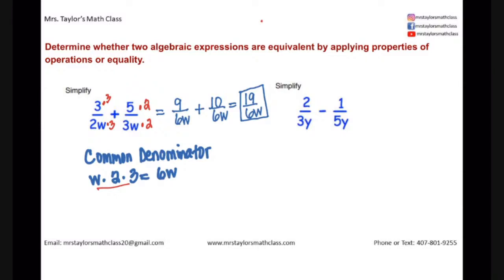For the next one, we have 2 over 3y minus 1 over 5y. Again, we have to find a common denominator, and we have a 3, a y, and a 5. From the first denominator, I'm missing a 5. So, I'm going to multiply both my numerator and my denominator by 5. From the second fraction, I'm missing a 3 in the denominator. So, I'm going to multiply both the numerator and my denominator by the number 3. So, now, let's rewrite this as 10 over 15y minus 3 over 15y. That was simplified to 7 over 15y.